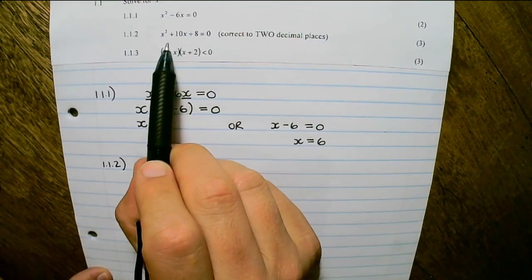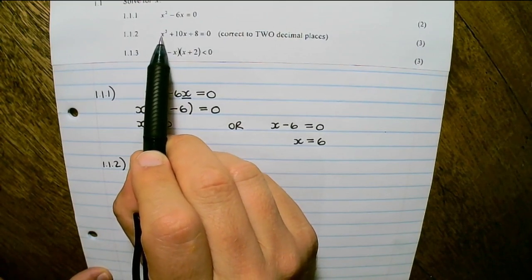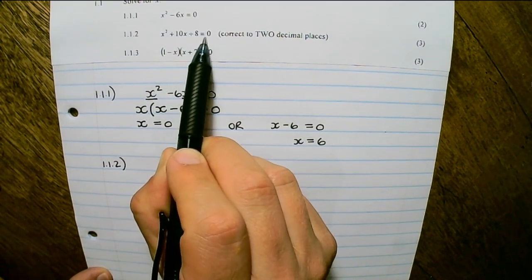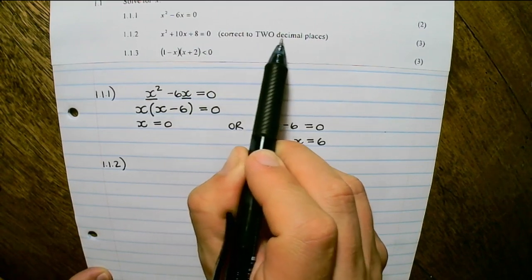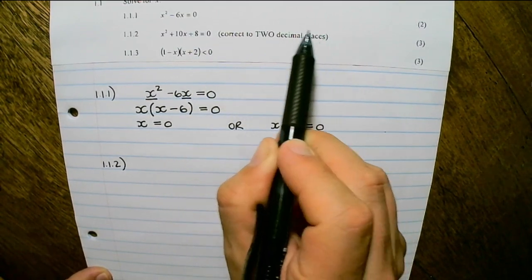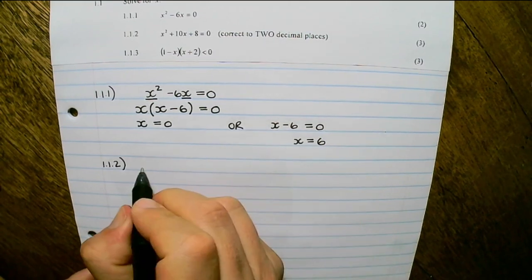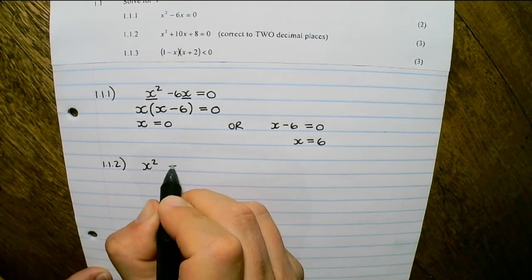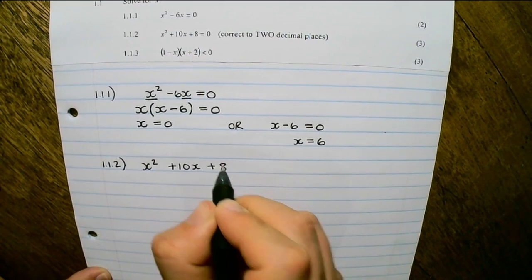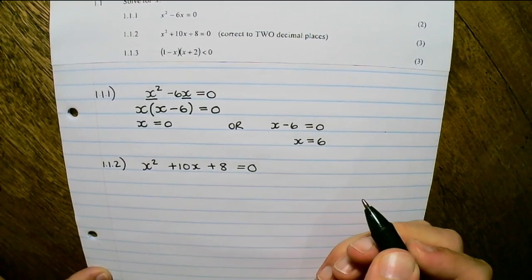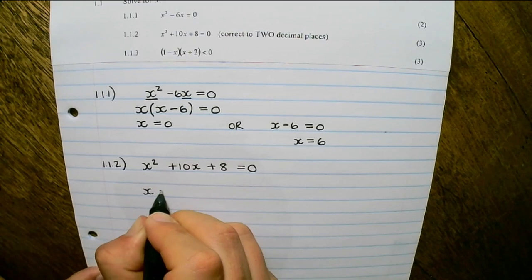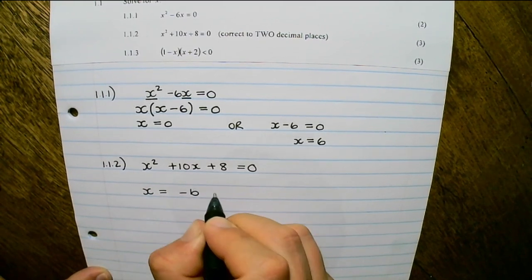The next question says solve for x where x squared plus 10x plus 8 equals 0, correct to two decimal places. Now this hints towards the quadratic formula. So I have x squared plus 10x plus 8 equal to 0, and on the formula sheet you would find the quadratic formula.